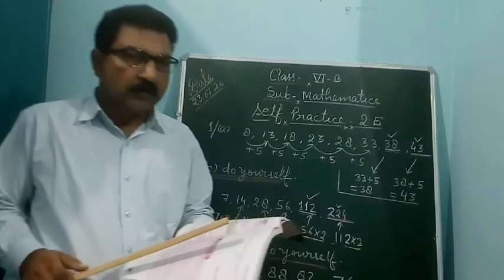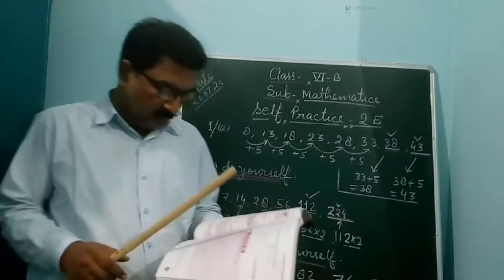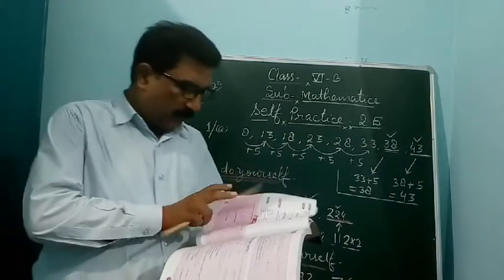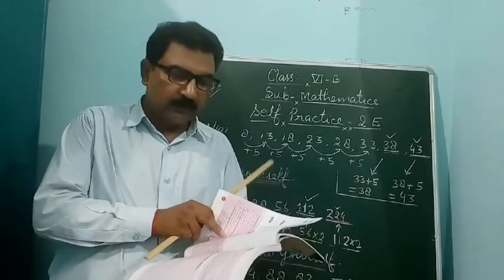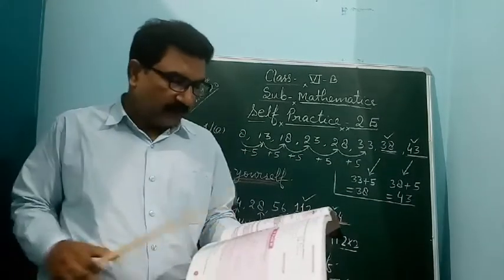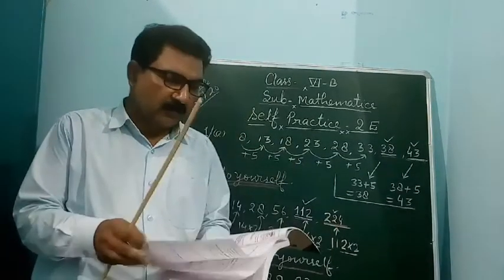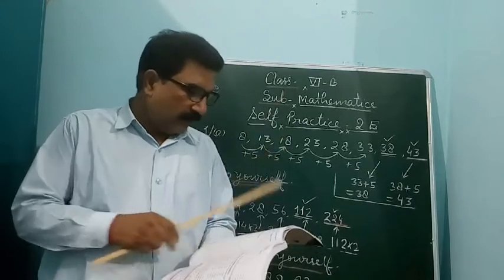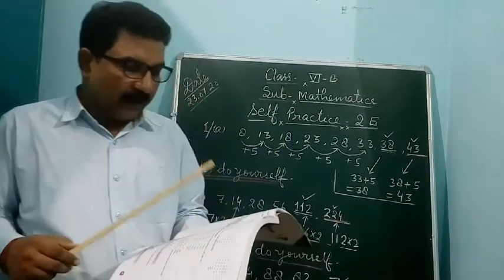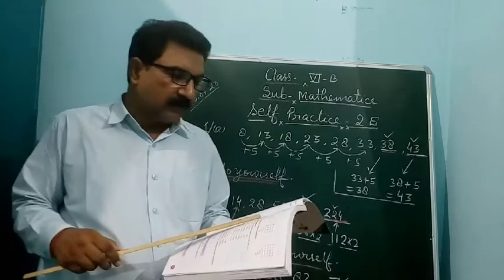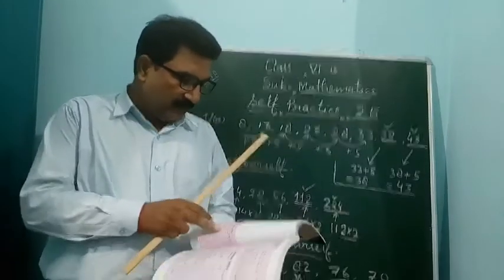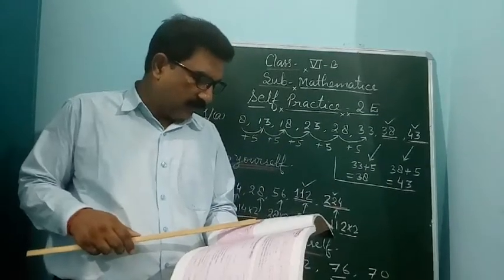Good morning. In mathematics, today I am going to explain self-practice number 2E. Yesterday I had explained number patterns — the theme of number patterns — and some examples such as rectangular numbers, triangular numbers, and square numbers, and some patterns in operations on whole numbers. But today I am explaining self-practice number 2E.